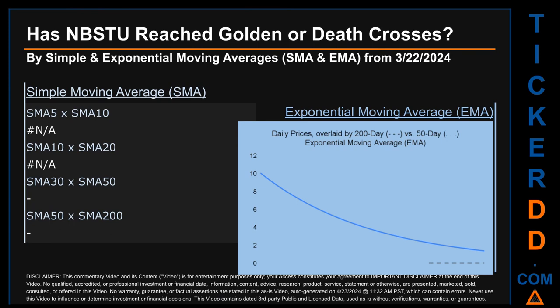Now, back to the video. Has NBSTU price reached golden or death crosses? Golden cross and death cross are basic signals that compare average prices across two specified trade-day ranges — a short-term versus a long-term range, for example five-day versus 10 trade days. A golden cross is a bullish signal; it appears when a ticker's short-term moving average crosses above its long-term average. Vice versa, a death cross is a bearish signal when the short-term crosses below its long-term moving average.